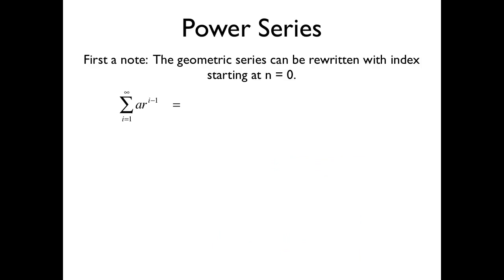Now we're going to do something called power series. First, an important note: we can write the geometric series with the index starting at i equals zero. Starting with i equals one: sum of a·r^(i-1), which you should think of as a plus a·r plus a·r² plus a·r³ and so on.